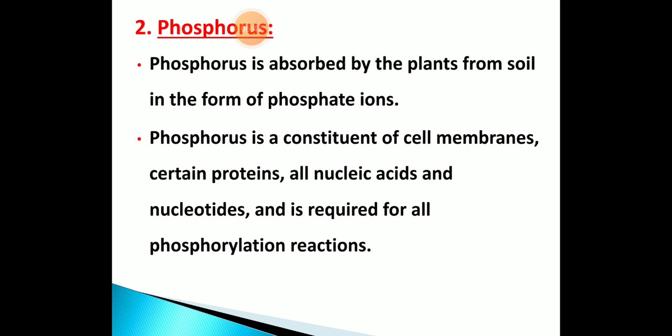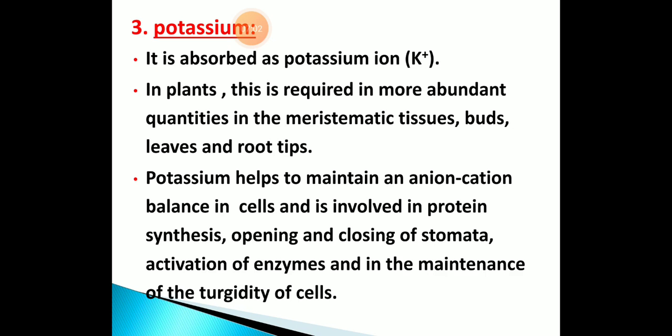Phosphorus is absorbed by the plant from the soil in the form of phosphate ions. Phosphorus is involved in nucleic acids, nucleotides, and phosphorylation activities. Potassium is absorbed in the form of K⁺ and is required for plant growth and development. Potassium helps to maintain the anion-cation balance in the plant body.